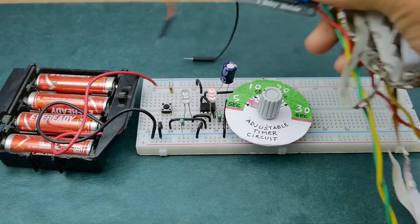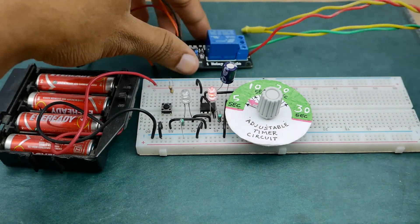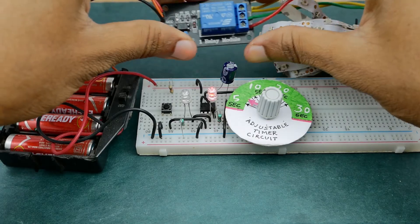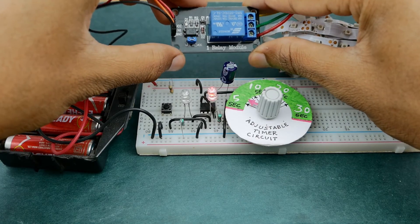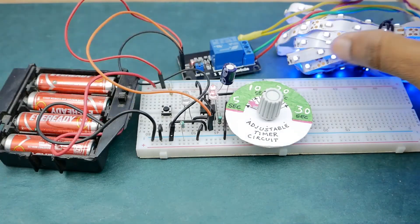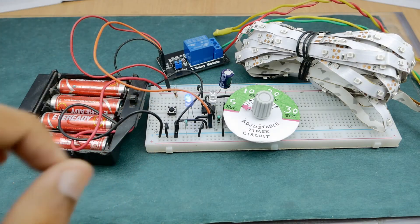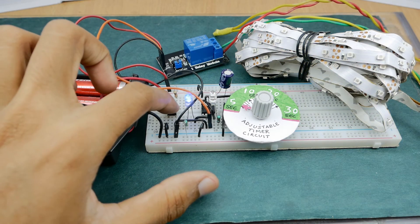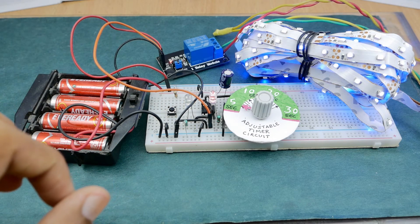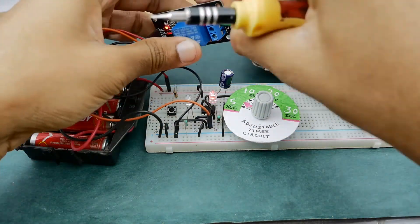A relay module can also be connected for controlling AC appliances or heavy loads. This module has an inbuilt transistor that inverts the input. So whenever the 555 timer's output is off, the relay module will turn ON the output and vice versa. You can also change this default behavior by connecting the output to the normally connected pin of the relay.